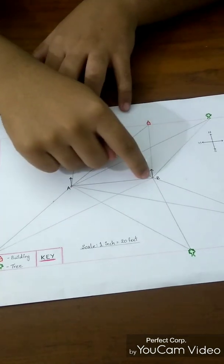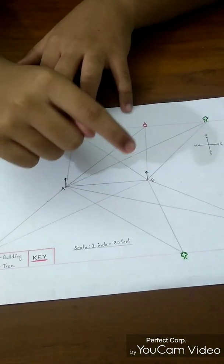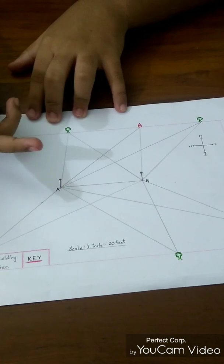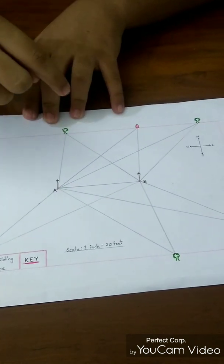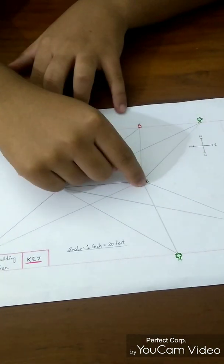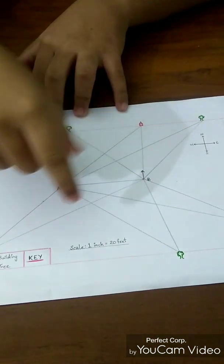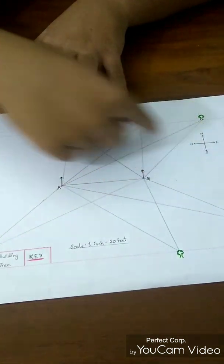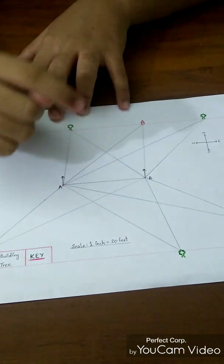I am going to do the same thing with point B. The alidade instrument is telling like around 100 feet of the distance between the tree and point B. I am going to use the same scale and draw another circle of 100 feet with B at the center.